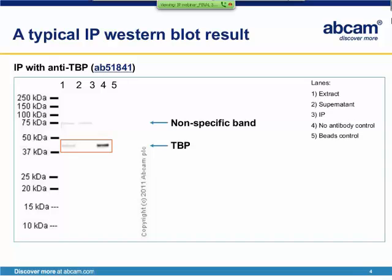In the next slide, you can see a typical IP western blot. This is an IP we performed in our laboratory using an antibody specific for TBP, the Tata-binding protein. The bands created by TBP are highlighted by the red square. You can see a nice enrichment of TBP in the IP in lane 3 compared to the extract in lane 1.